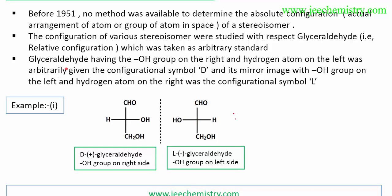Glyceraldehyde is taken as a reference for providing relative configuration. In glyceraldehyde, the OH group is on the right side and the H group is on the left side. The mirror image of this will have OH on the left side and H on the right side.